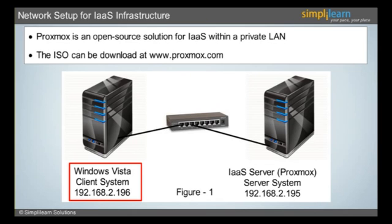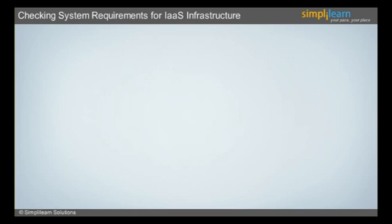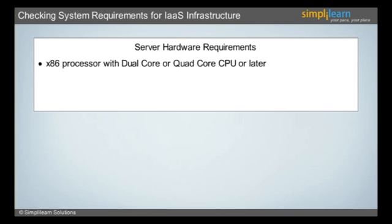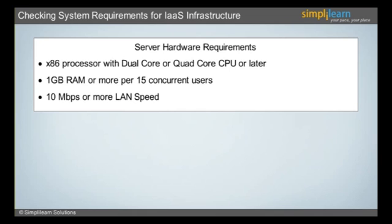We will be discussing the system requirements in detail in the next slide. The minimum recommended server hardware requirements are an x86 processor with dual-core or quad-core CPU or later, 1 GB RAM or more per 15 concurrent users, and 10 Mbps or more LAN speed. If there is a greater number of users, there is a need to increase the RAM by an additional 1 GB per 15 concurrent users.